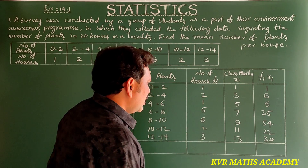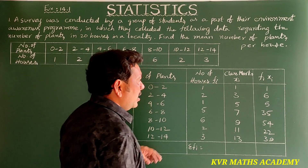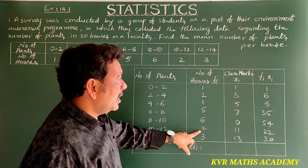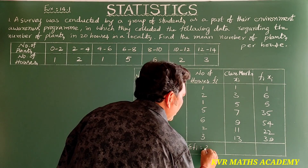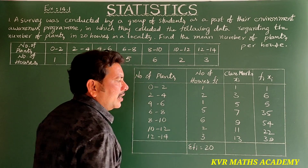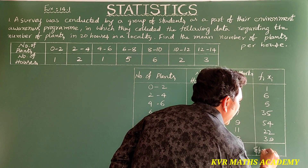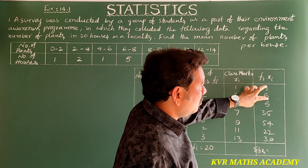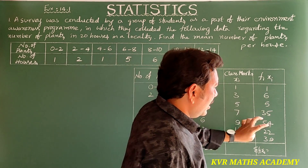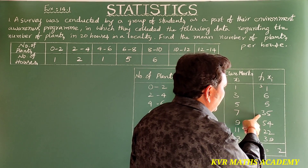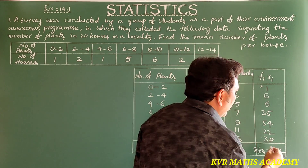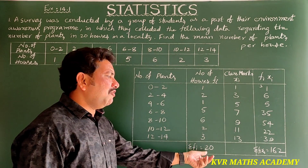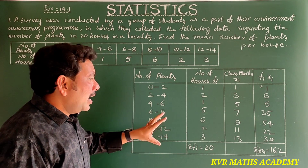Now we find sigma fi and sigma fi·xi. Sigma fi equals 1+2+1+5+6+2+3 = 20, which matches the 20 houses given. Adding all fi·xi values: 1+6+5+35+54+22+39 = 162. So sigma fi·xi = 162 and sigma fi = 20.